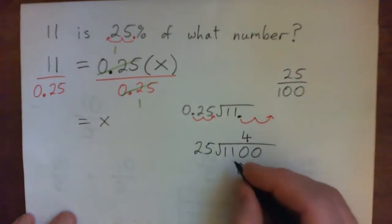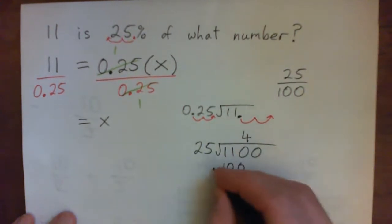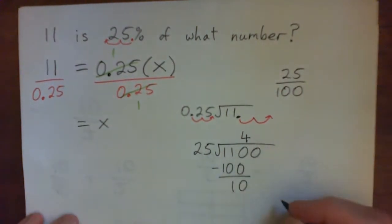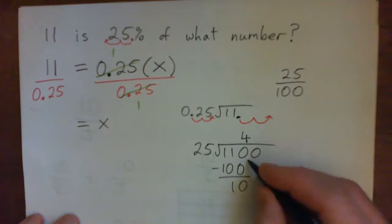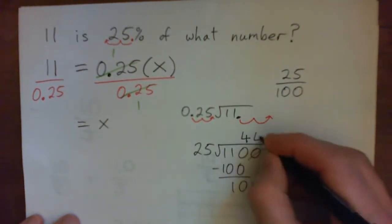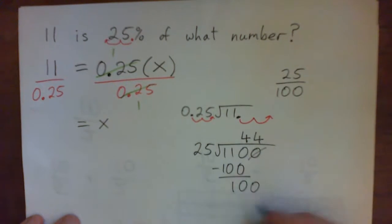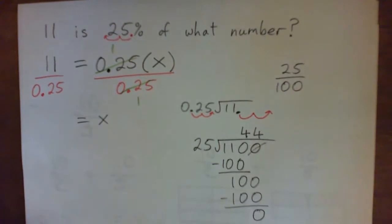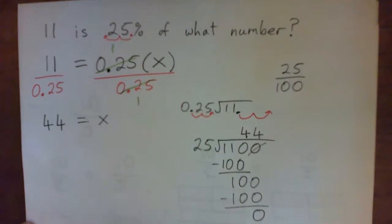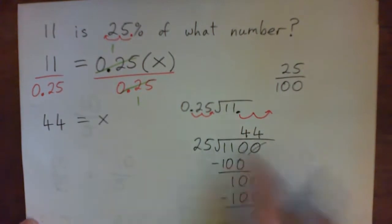If it doesn't work out, no problem. 4 times 5 is 20, carry 2. 4 times 2 is 8 and 2 is 10. And now subtract: 110 minus 100 is 10. Bring this 0 down. 25 into 100? 4 times. 4 times 25 is 100. When you subtract, we get remainder of 0.